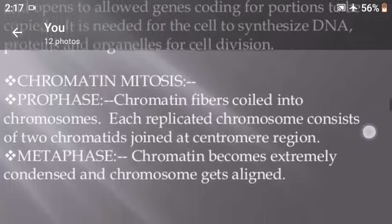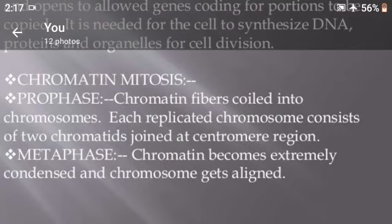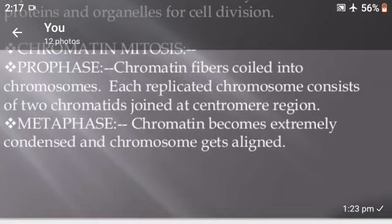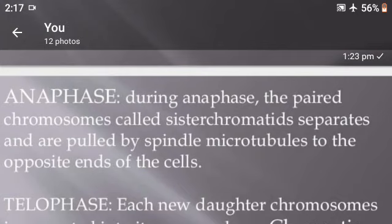Chromatin during mitosis. Prophase: chromatin fibers coil into chromosomes. Each replicated chromosome consists of two chromatids joined at the centromere region. Metaphase: chromatin becomes extremely condensed and chromosomes get aligned. Anaphase: during anaphase, the paired chromosomes called sister chromatids separate and are pulled by spindle microtubules to the opposite end of the cell.